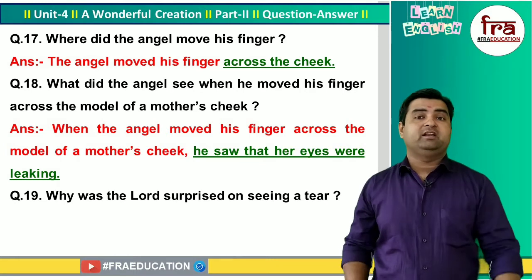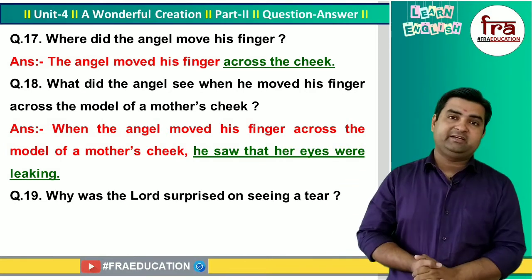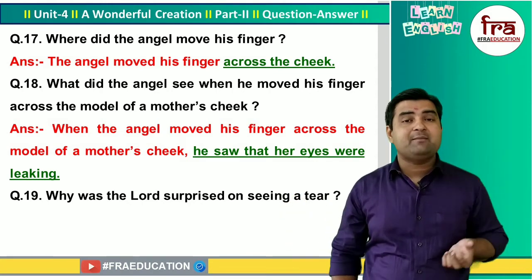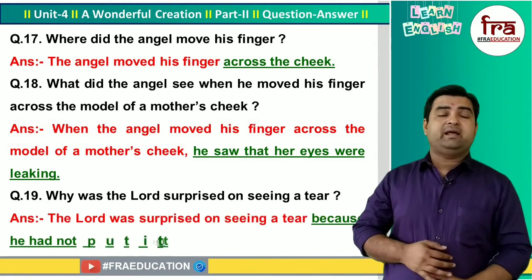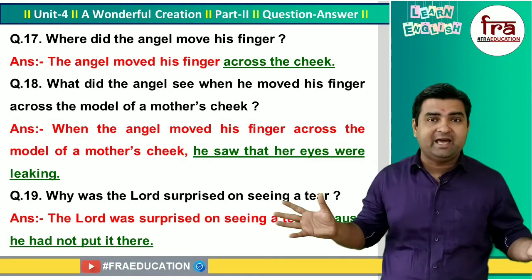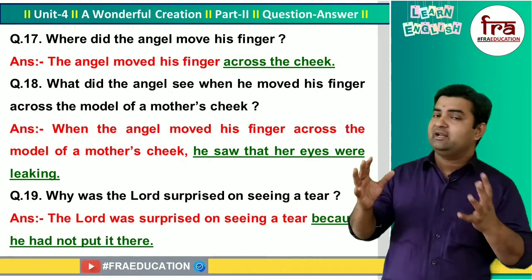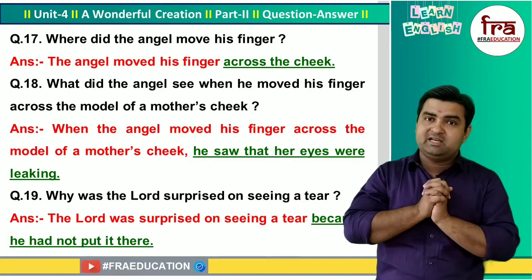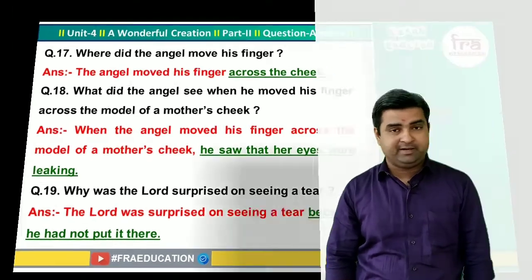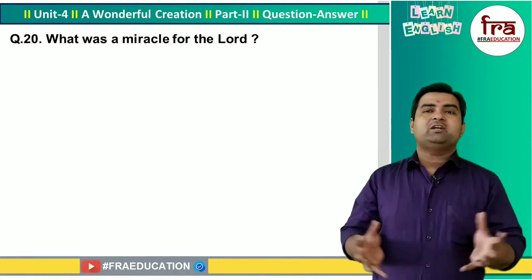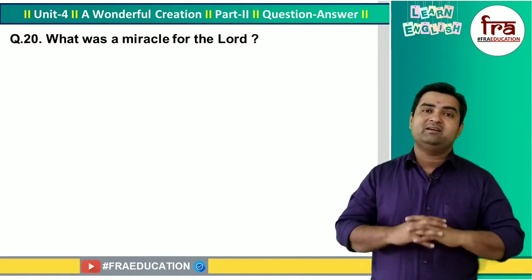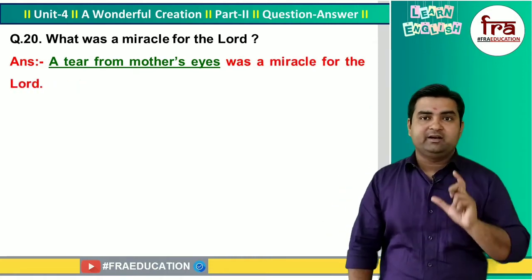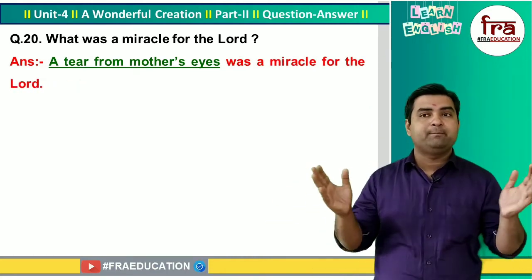Question number 19: Why was the Lord surprised on seeing a tear? The Lord was surprised on seeing a tear because he had not programmed it. Question number 20: What was the miracle for the Lord? A tear from mother's eyes was a miracle for the Lord.